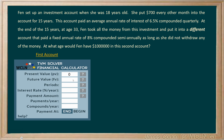Our future value is going to be left blank — that's what we're solving for. The interest rate on this first account is 6.5%, and our payment amount is -700. The negative sign is used because this money is coming out of Fenn's pocket and going into an investment account. Payments per year: every other month means six times per year. Compounding is quarterly, so that's four compounds per year.